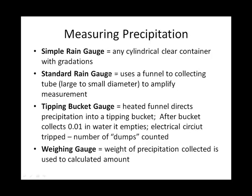In order of increasing complexity, there's the simple rain gauge, which most of us have if we've got one out in our backyard. Then there's a standard rain gauge, which adds a funnel to collect the water and has to adjust the scale. The last two are things you'd see in the ASOSes — the stations that automatically measure weather conditions and relay it electronically. One has a tipping bucket that counts the number of tips to fill the bucket, which you translate to a volume of water. The other uses a scale to measure the mass of precipitation.